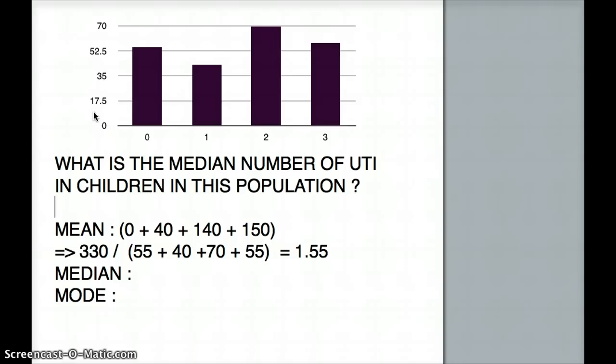First to arrange my values. This is about 55, so 55 times 0 is 0. The next one is about 40, 40 times 1 is 40. And then 70 times 2 is 140, and 55 times 3 is 150. So I have these numbers all laid down.